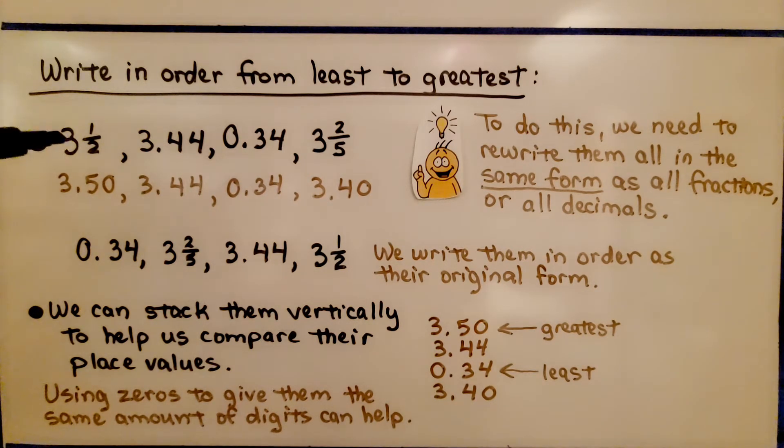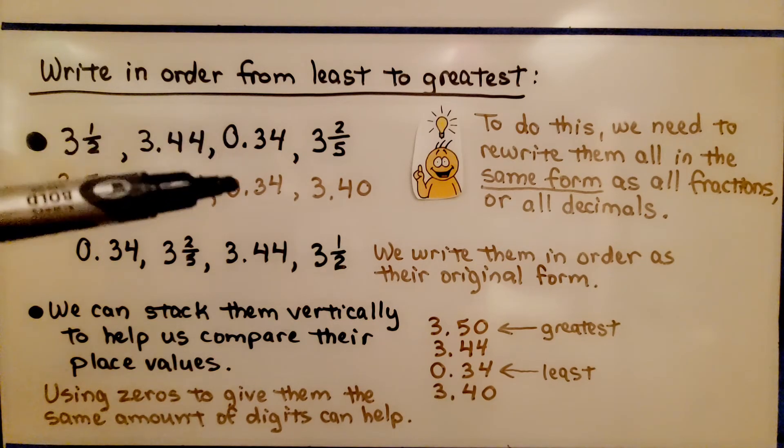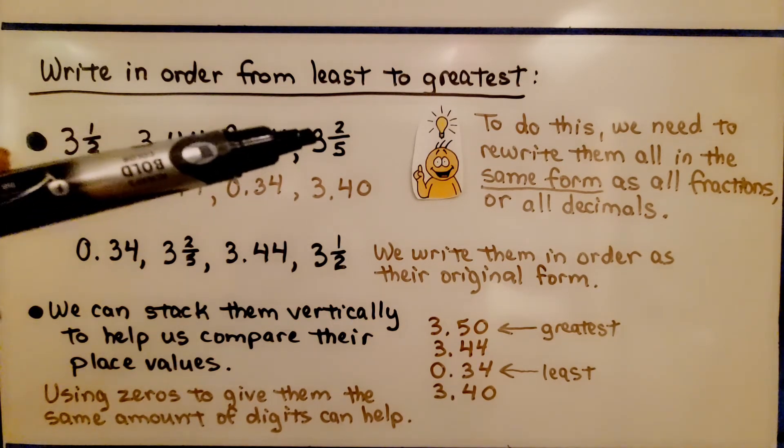We can write 3.5 as 3.50. This one can stay as it is because we're going to turn them all into decimals. This one can stay as it is.